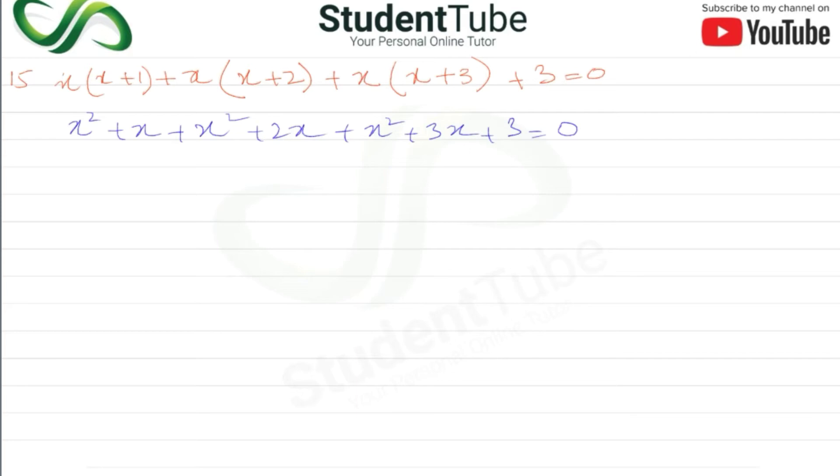Collecting terms: 3x² + 6x + 3 is equal to 0.